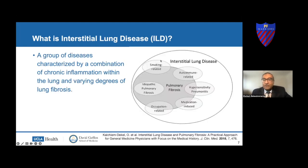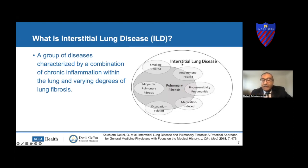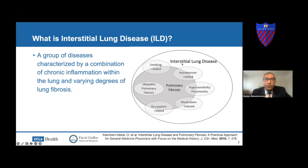So what is an interstitial lung disease? ILD is a recognized group of diseases characterized by a combination of chronic inflammation within the lungs and varying degrees of lung fibrosis. Chronic inflammation consists of accumulation of inflammatory cells like lymphocytes and macrophages, and various pro-inflammatory cytokines and chemokines, all of which can sometimes lead to pulmonary fibrosis. ILD can manifest primarily as an inflammatory lung disease with little, if any, features of fibrosis.